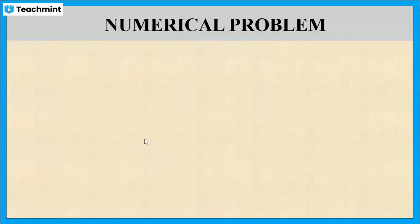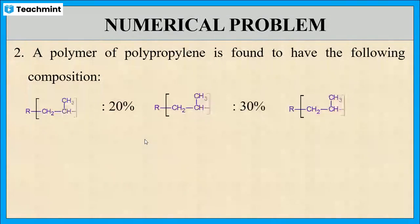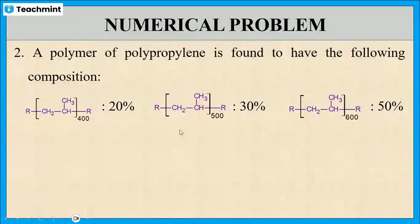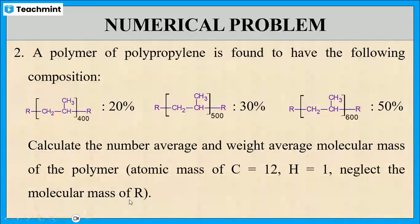Now let us see the second problem. A polymer of polypropylene is found to have the following composition: polypropylene with 400 units at 20%, polypropylene with 500 units at 30%, and polypropylene with 600 units at 50%. Calculate the number average and weight average molecular mass of the polymer. The atomic mass of carbon is 12, and the molecular mass of R is to be neglected.